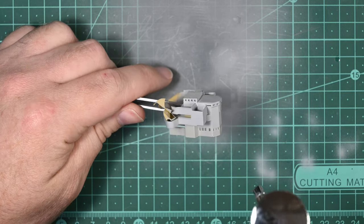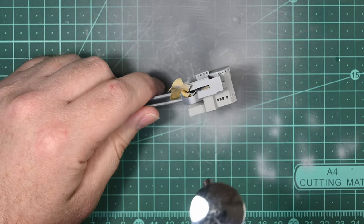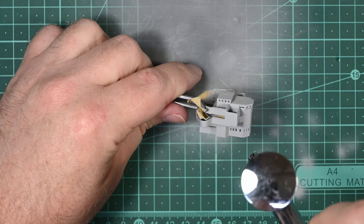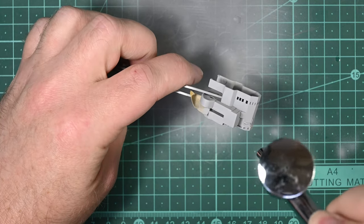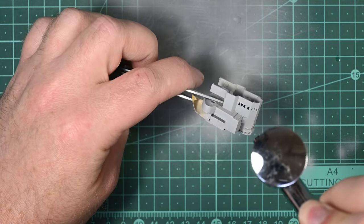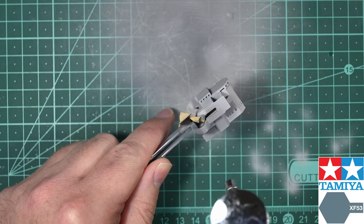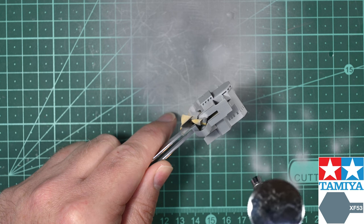Then, as always, to check my work I spray the area with Mr. Surfacer to fill the micro scratches and to reveal any defects that I haven't noticed. Fortunately I'm happy with how these components look so I can then move straight on to painting.